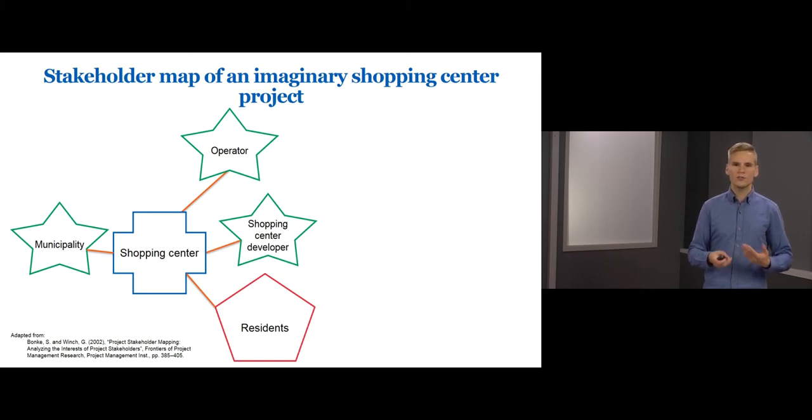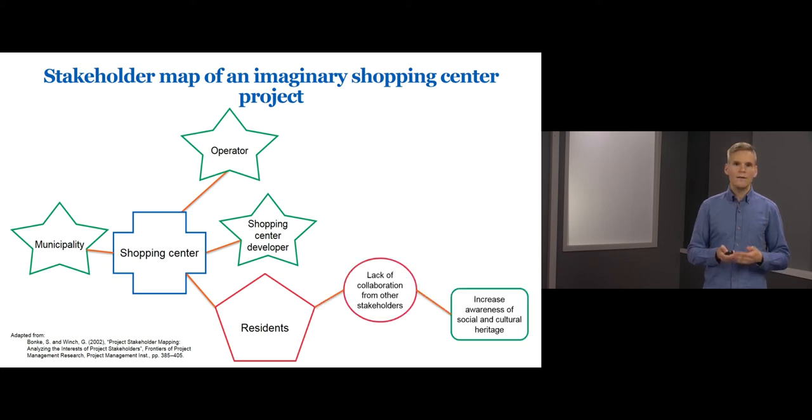Now let's consider some examples of problems and solutions that these stakeholders may bring into this project. First, the residents have a problem that they are very concerned about the collaboration between stakeholders, as they have been somewhat excluded from the project. The residents are particularly concerned about the social and cultural heritage of the area and think that the new shopping center might ruin it.